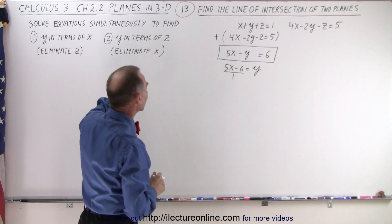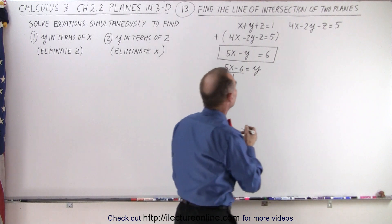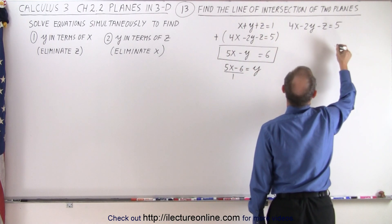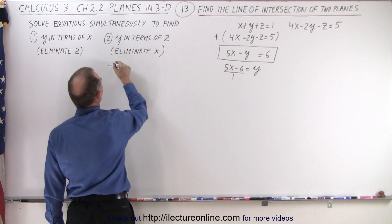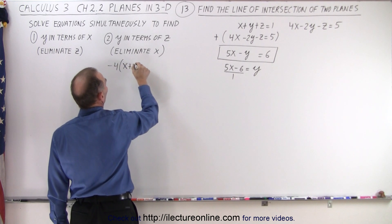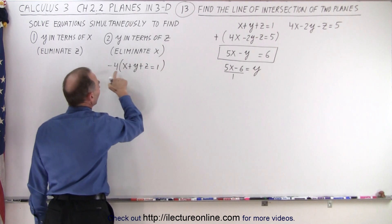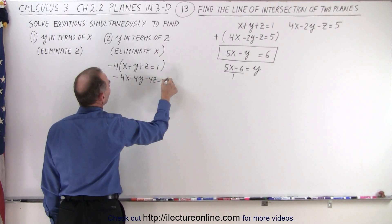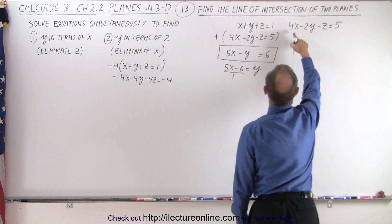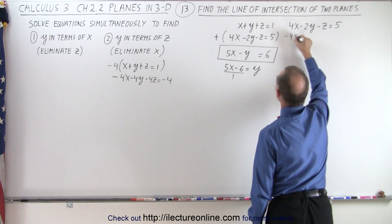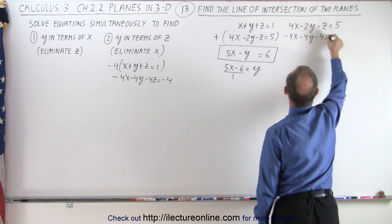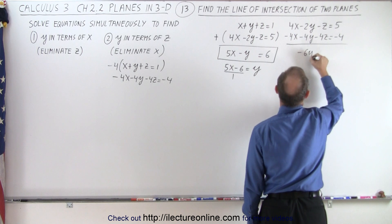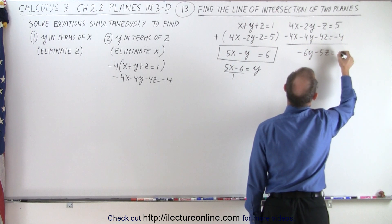Now we want to eliminate x. That means I can multiply this equation by minus 4. So taking that equation: minus 4 times x plus y plus z is equal to 1. Multiplying both sides by minus 4, we get minus 4x minus 4y minus 4z equals minus 4. Adding that to the existing equation will get rid of the x. So minus 4x minus 4y minus 4z equals minus 4, add the two together, the x's drop out — I get minus 6y and minus 5z is equal to 1.